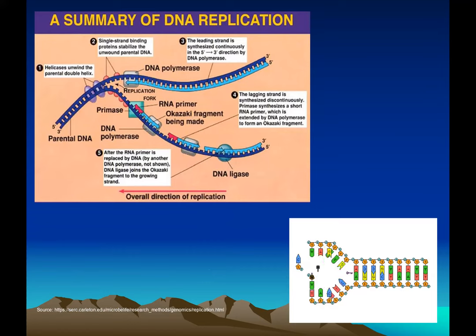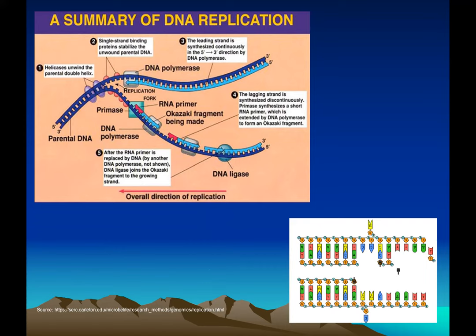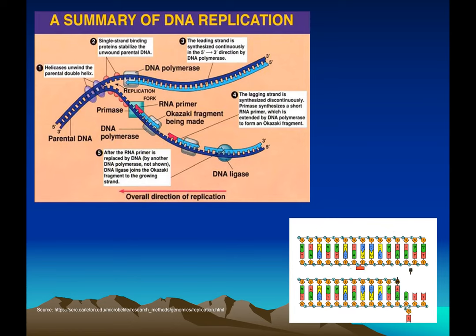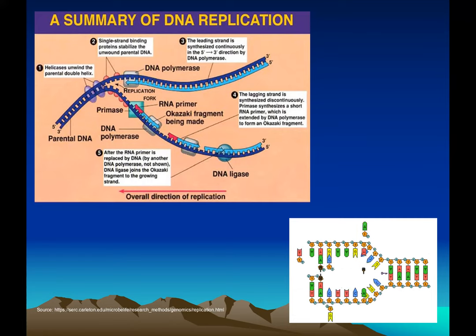There is also an enzyme called topoisomerase that makes sure the DNA doesn't get wound up ahead of the replication fork. So to summarize: helicase unwinds the parental strand; single-stranded binding proteins keep the strands apart; the leading strand is synthesized continuously five-prime to three-prime; the lagging strand is made in Okazaki fragments; and DNA ligase joins those fragments together.